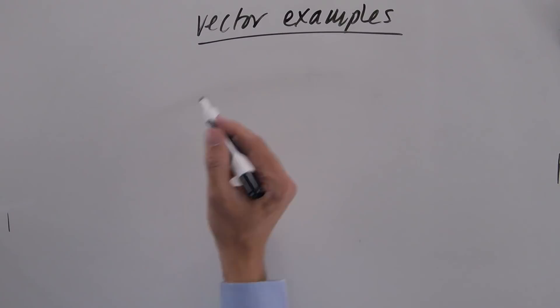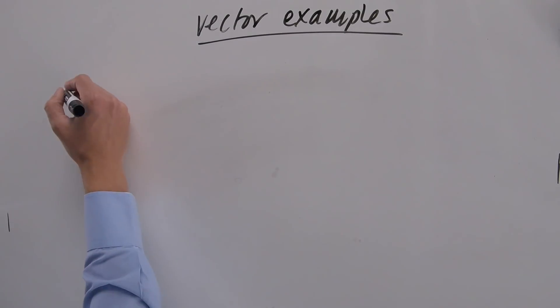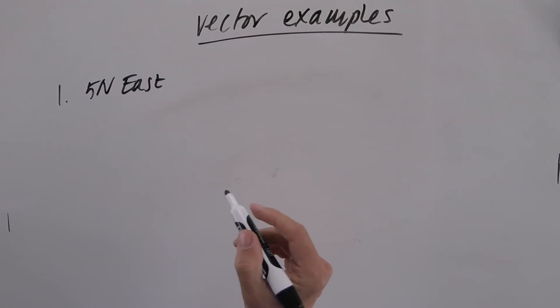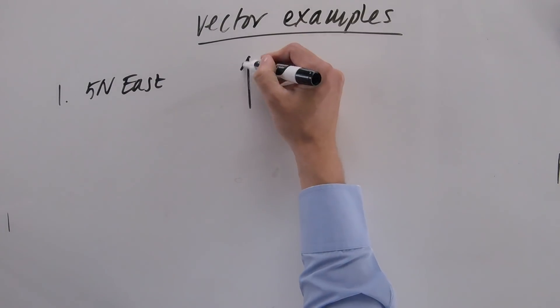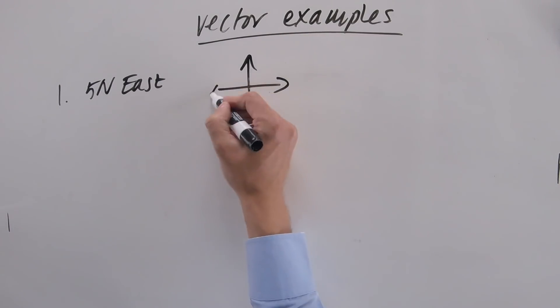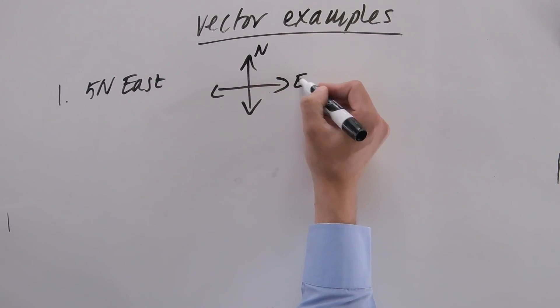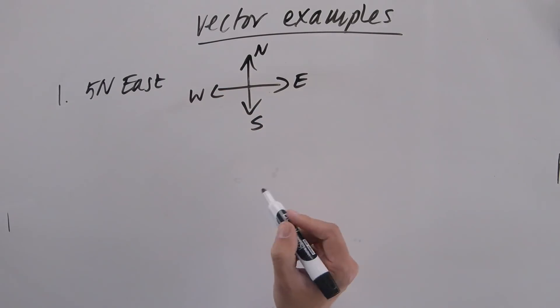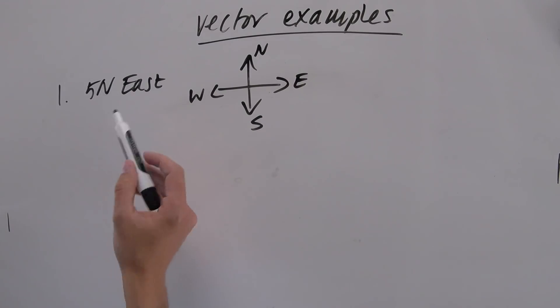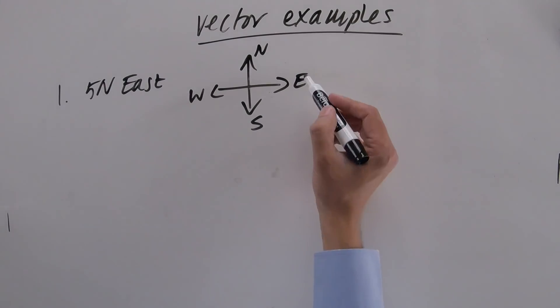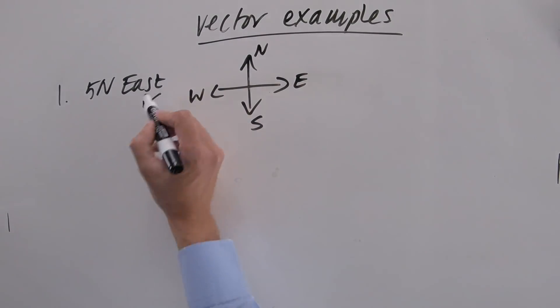We're going to try some vector examples now. So if I do number one, we do five newtons east. The first thing then, we're going to have to try and remember which direction is which. So you've got, you never eat shredded wheat, or W E across the horizontal.